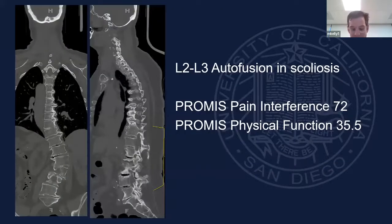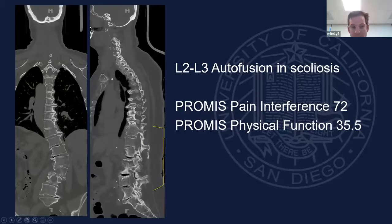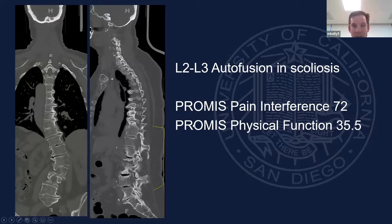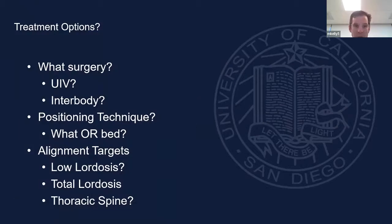We have a CT scan. The critical things: she's got a fixed coronal malalignment. To make her straight, if you desire a Cobb angle of zero, you've got to cut that. She has vacuum discs, which leaves lots of opportunity for correction. We also collected PROMIS scores — her pain interference is extremely high and her physical function is very low. So, treatment options: What's our UIV? Are we going to do interbodies? Which table? What are our alignment targets?